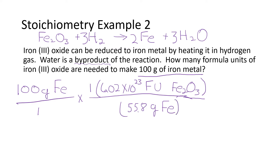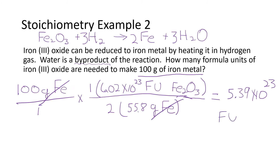The coefficient for iron in the balanced equation is two. So we take 100 times 6.02 × 10²³, divided by 2, and divided by 55.8. That gives us 5.39 times 10 to the 23rd. The grams of iron in the top and bottom cancel out, leaving formula units of Fe2O3.